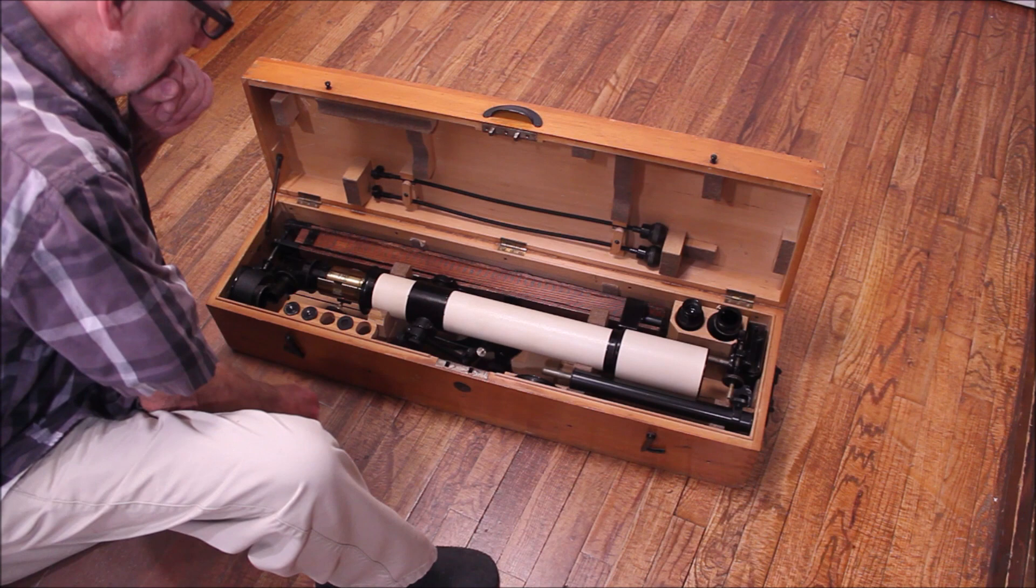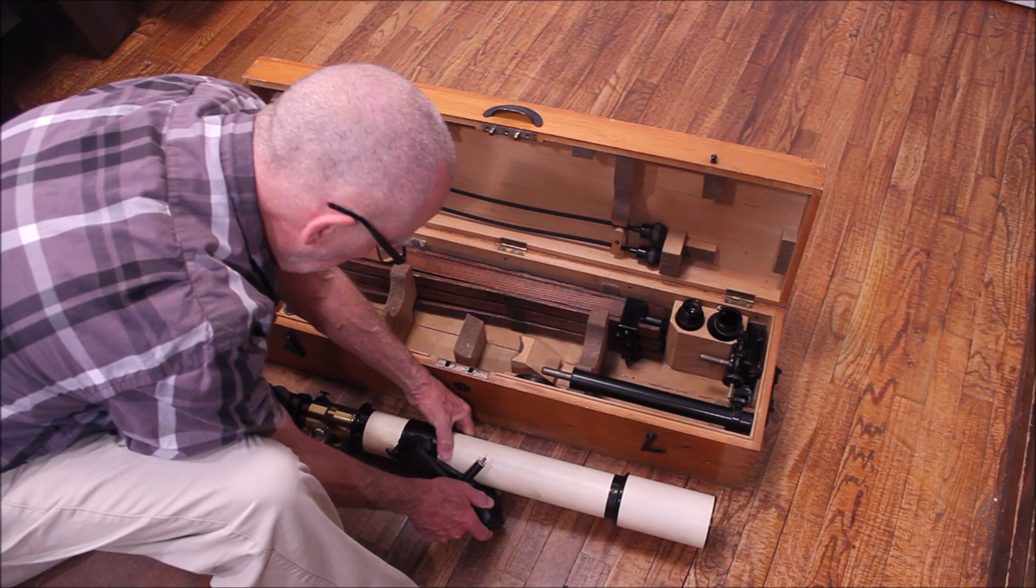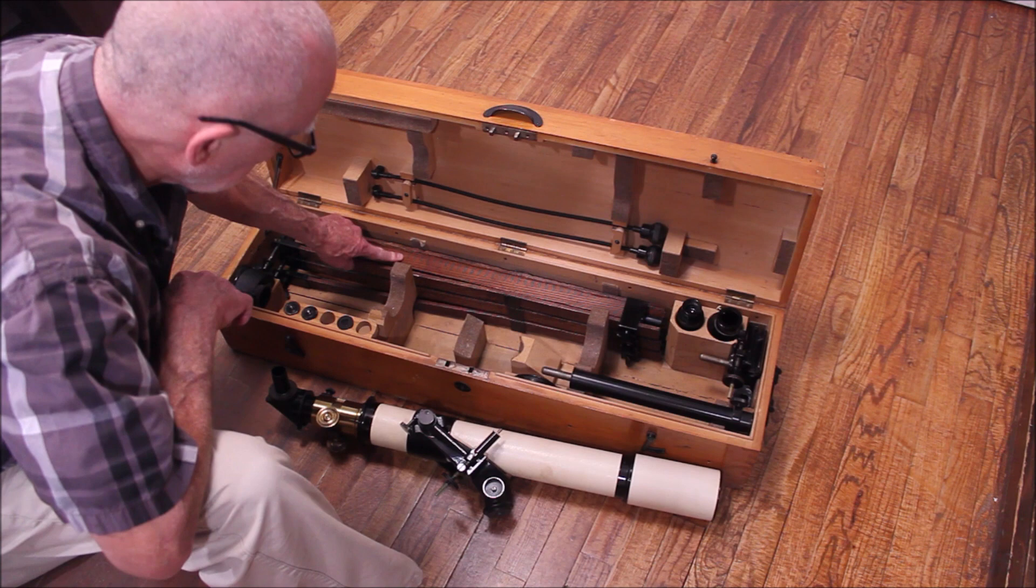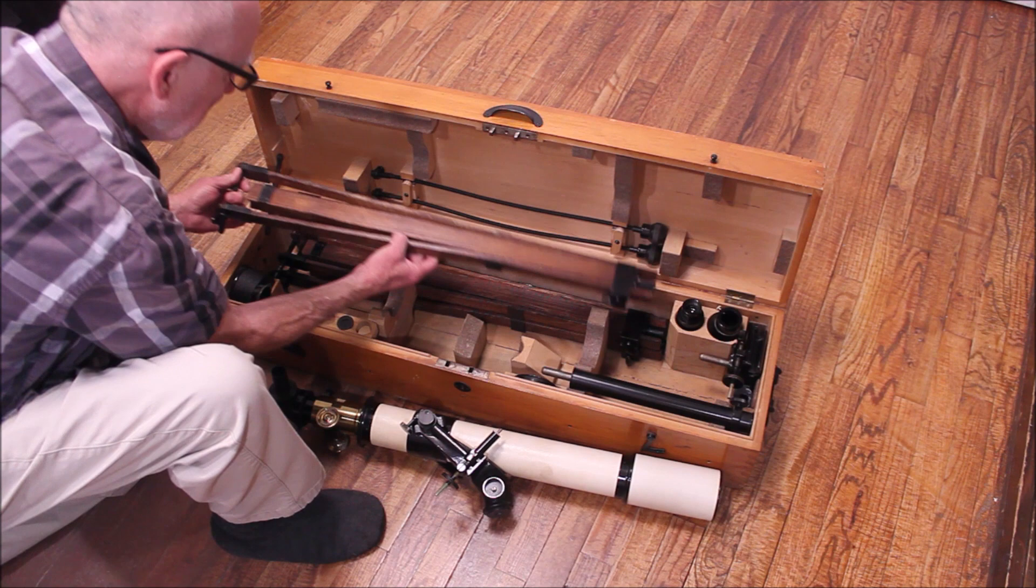Here we have, and this is on a specialized kind of a holding platform inside there. This is the OTA and the Altaz mount. Here's a poro prism. Here are the legs. Slow motion controls, all that stuff. I wanted to show you how the legs are stored in here. These are compressed. So what happens is, when you pull them out, they expand out.